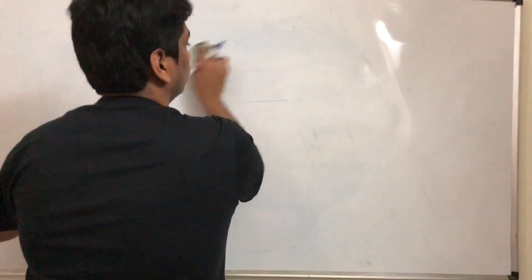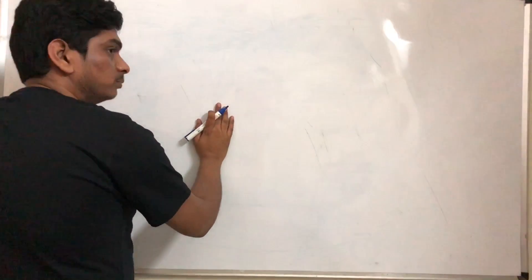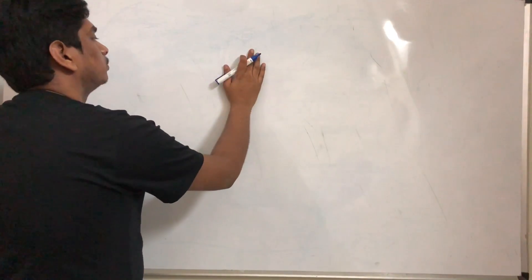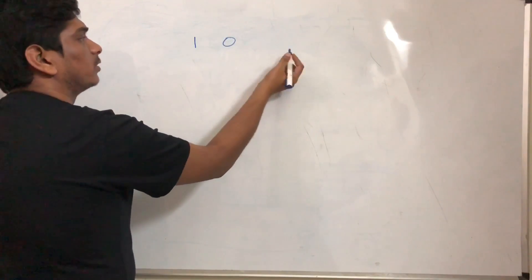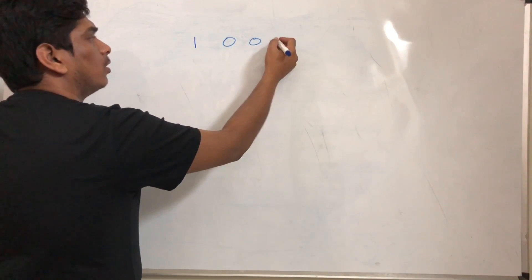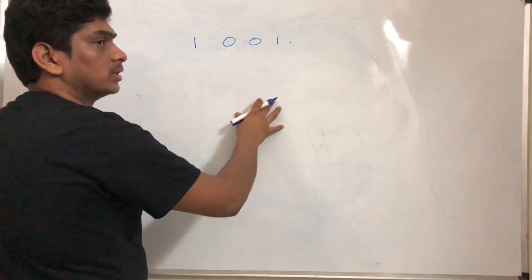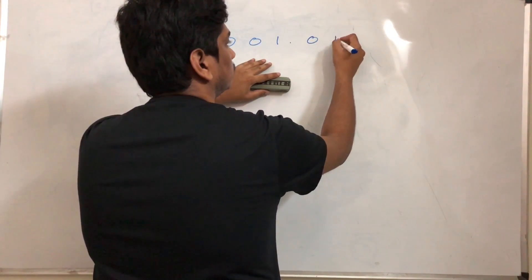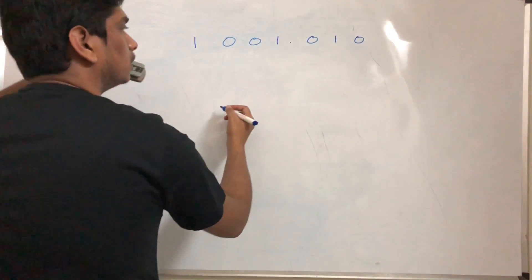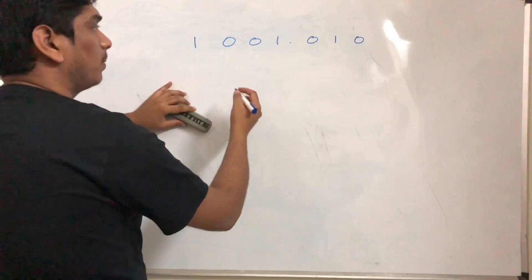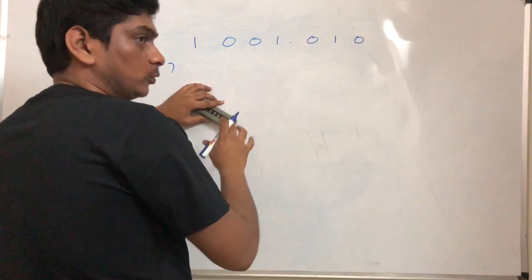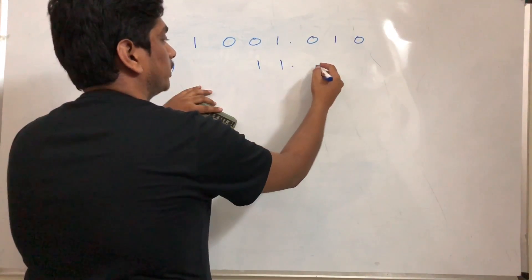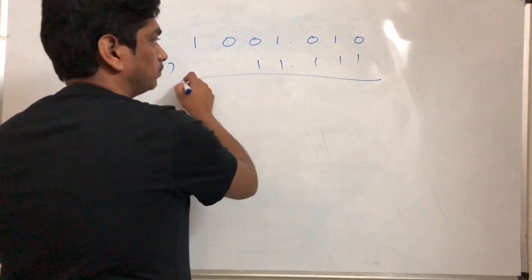A more challenging example: take 1 0 0 1 point 0 1 0 0 minus 1 1 point 1 1 1.